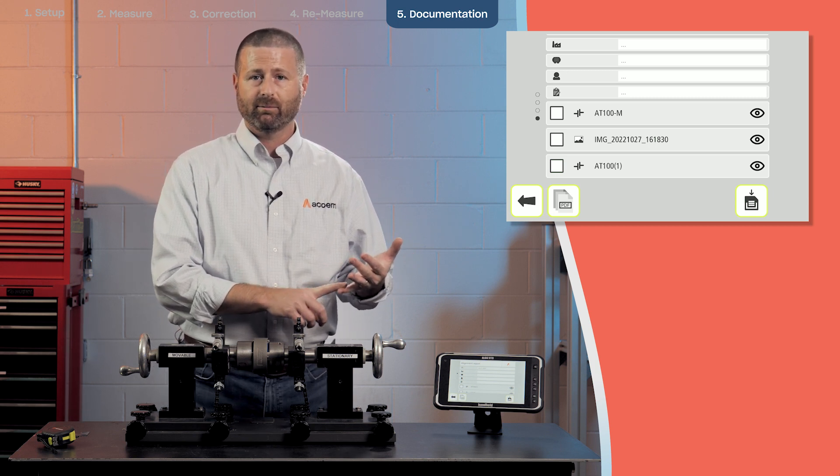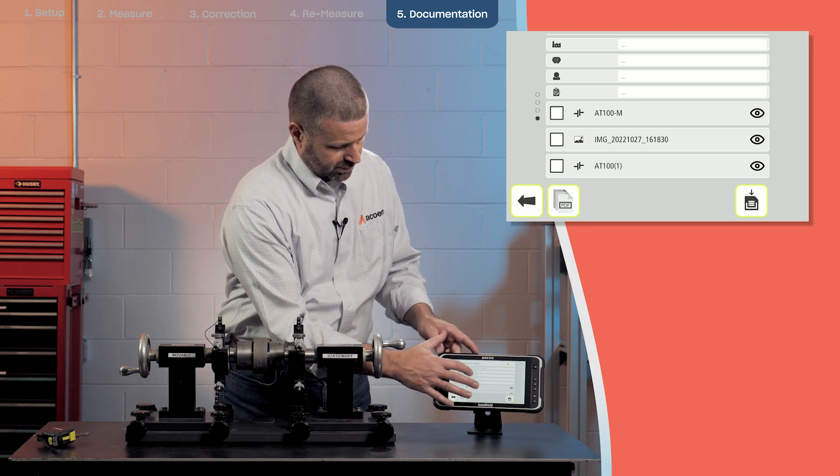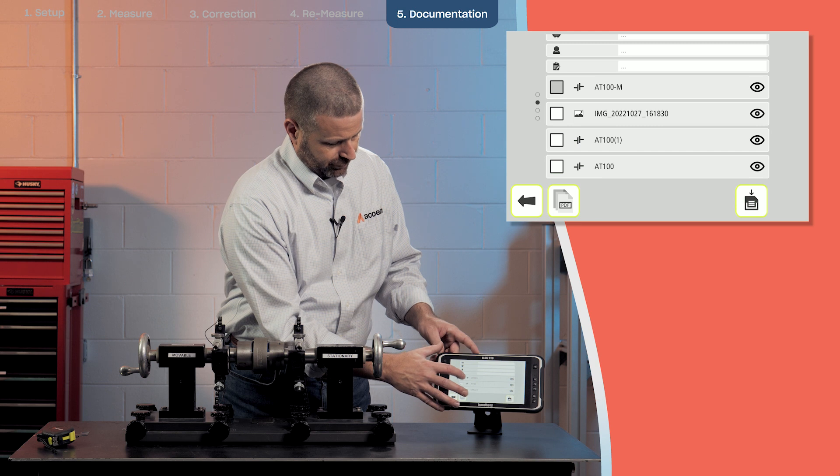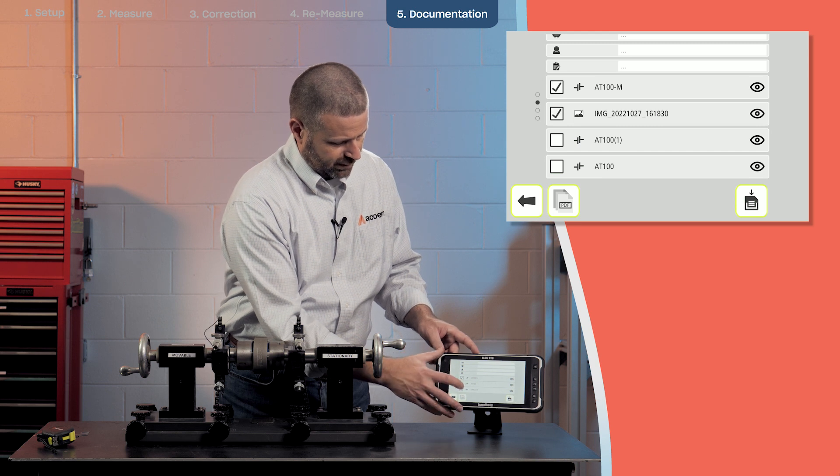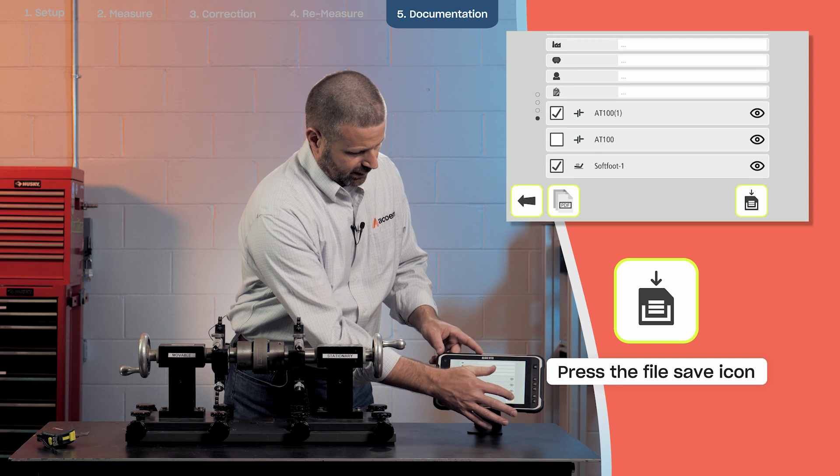a machine name, and any machine notes that you may have. We'll select the AT 100 and soft foot and then save it.